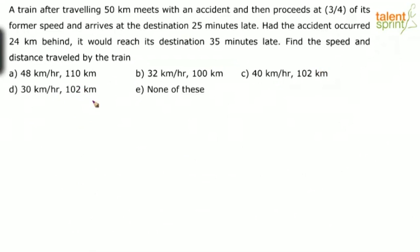Now how do we solve this? First, we'll focus on finding out the speed of the train. It says the train had traveled 50 kilometers without any difficulty and then meets with an accident. So after 50 kilometers, it meets with an accident, and because of this it has to move at three-fourths of its former speed. Originally it was running at some speed S, but after the accident the speed reduced to three-fourths of S.